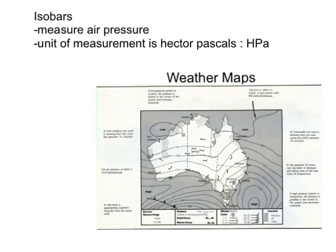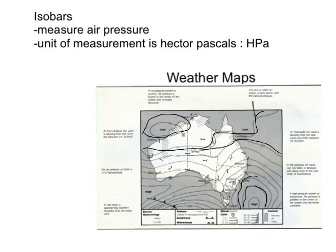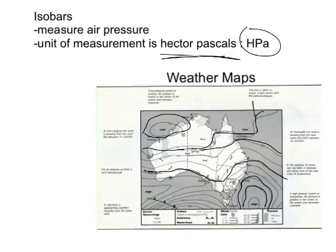The isobars are the feature that make it a weather map. Basically, the way these isobars work is that anywhere on a given line is the same air pressure. Air pressure is measured in hectopascals, or HPA. For example, this line here is 1012 running through Perth. So everywhere on this line is at 1012 — just north of Brisbane is 1012, Perth is 1012, and Adelaide is around 1012. Anywhere on that line is the same barometric air pressure.